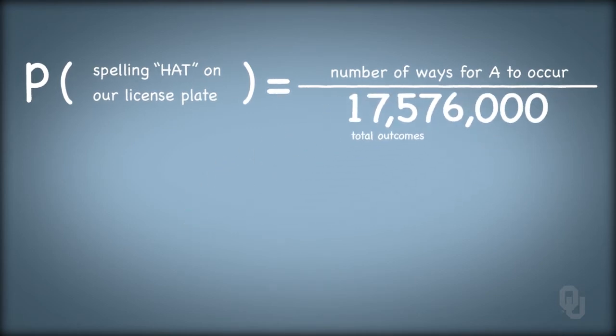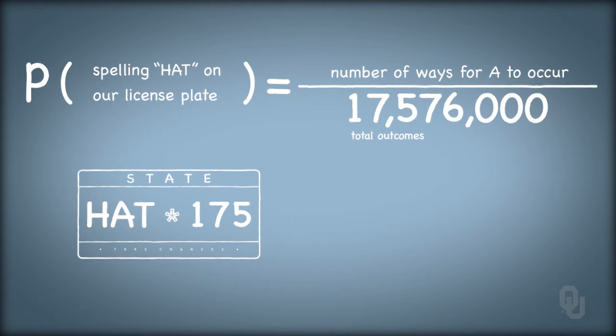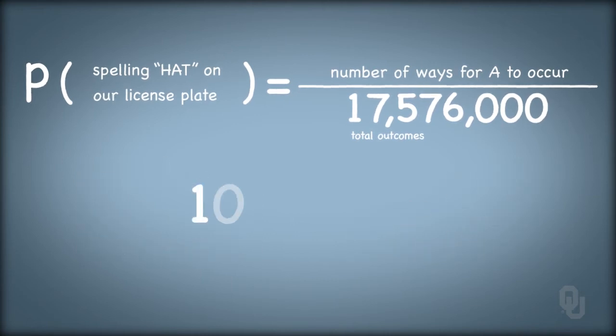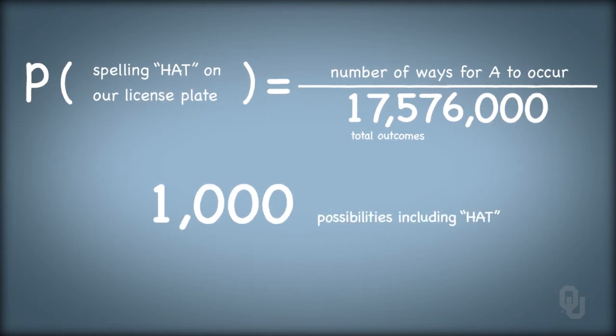How many ways are there for the event spelling hat to occur? Naturally, the three letters have to spell H-A-T. Then there are three numbers remaining. One possibility is the plate hat 175. Another is hat 549. In total, there are 10 times 10 times 10, or 1,000 possibilities to spell hat on our license plate, because there are 1,000 possibilities to arrange the three numbers that follow it.